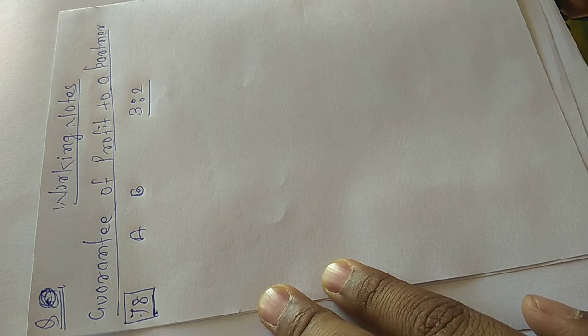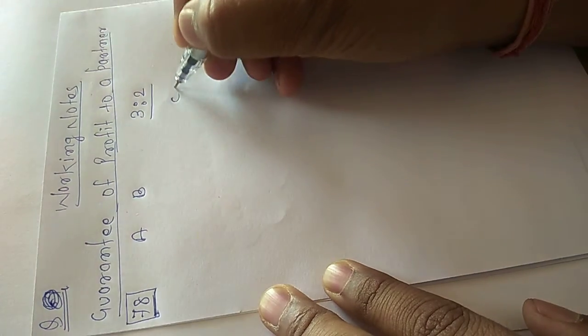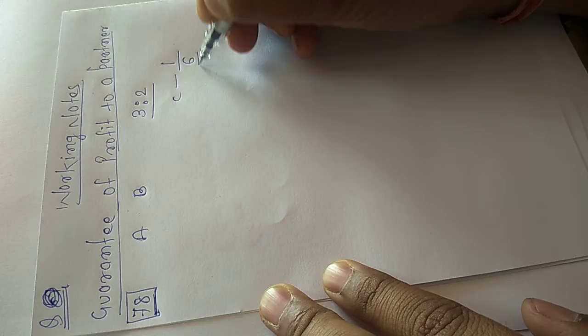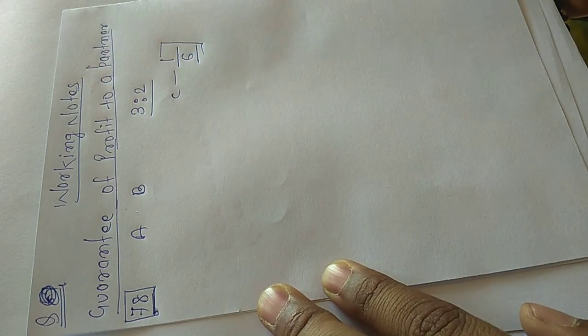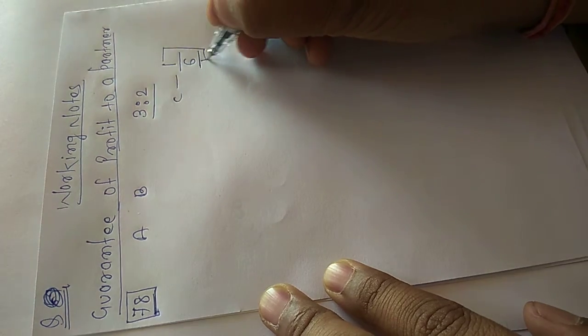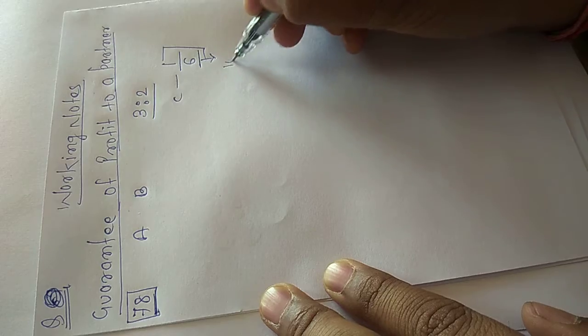C was admitted for 1/6 share of profit. So their new partner is C and their profit share is equal to 1 by 6. With a minimum guarantee, C has given guarantee, minimum profit, rupees 10,000.